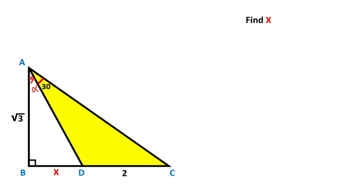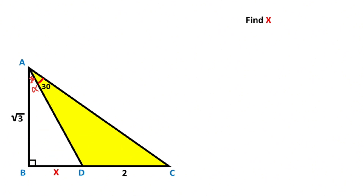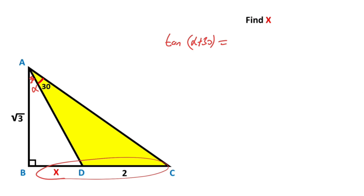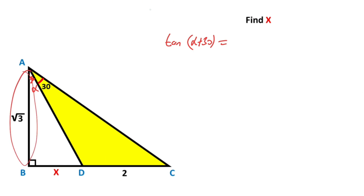First step: let's call this angle alpha. If you focus on triangle ABC, for this triangle we calculate tangent of (alpha + 30 degrees). Notice that tangent(alpha + 30°) equals (x + 2) over root 3.